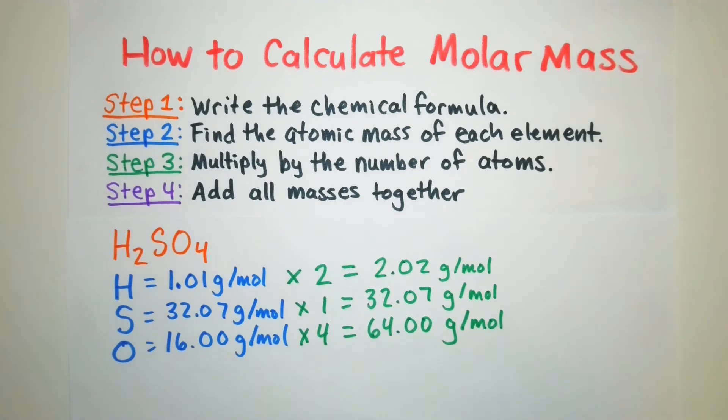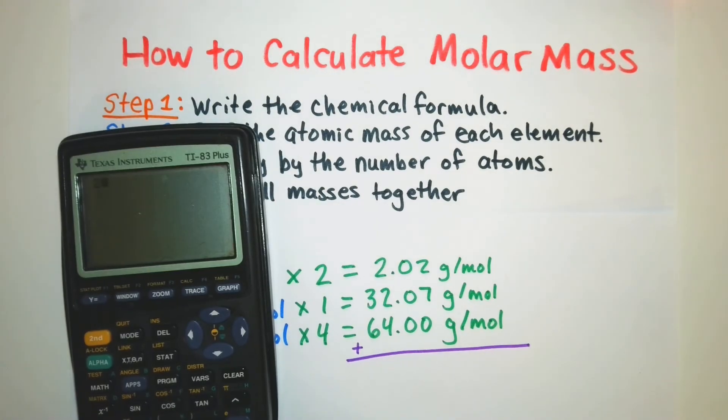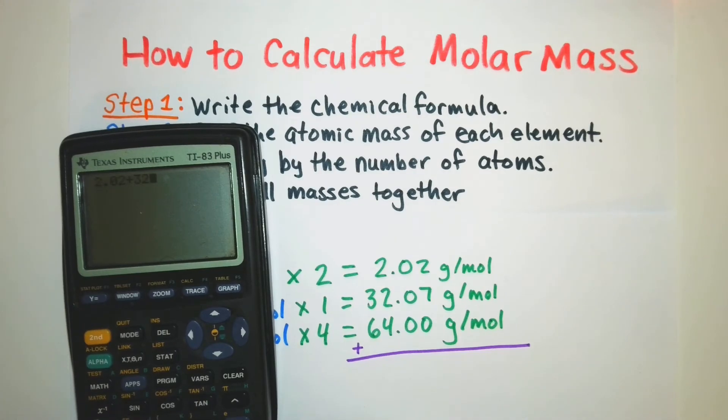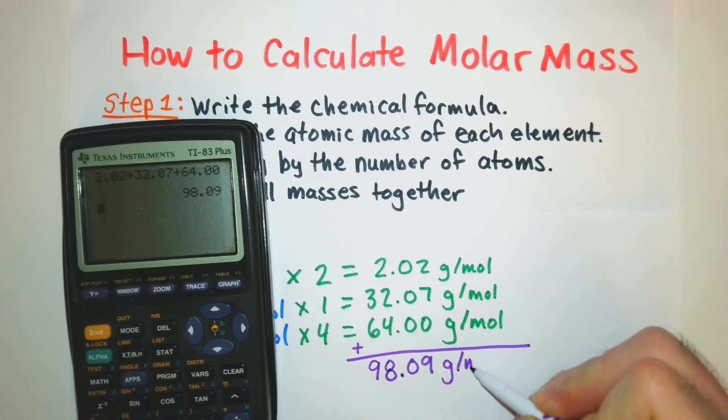All right and the final step all we have to do is add this up and then we'll have our molar mass of sulfuric acid. 2.02 plus our 32.07 plus our 64.00 and we have a molar mass of 98.09 grams per mole.